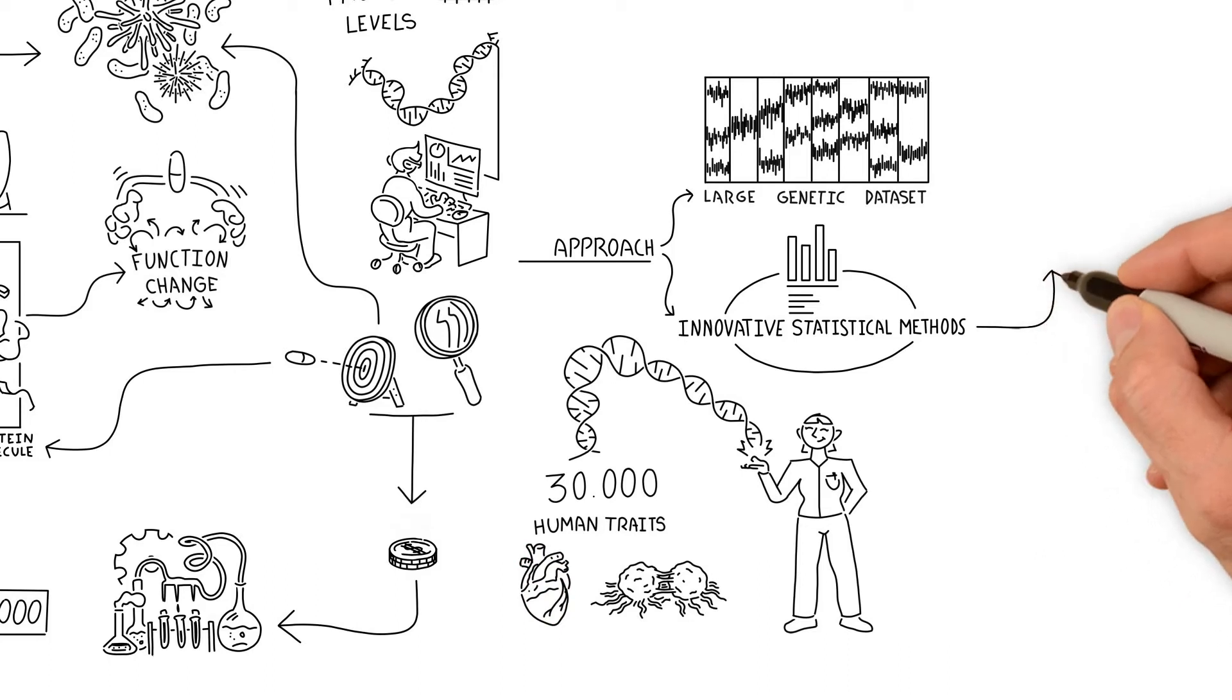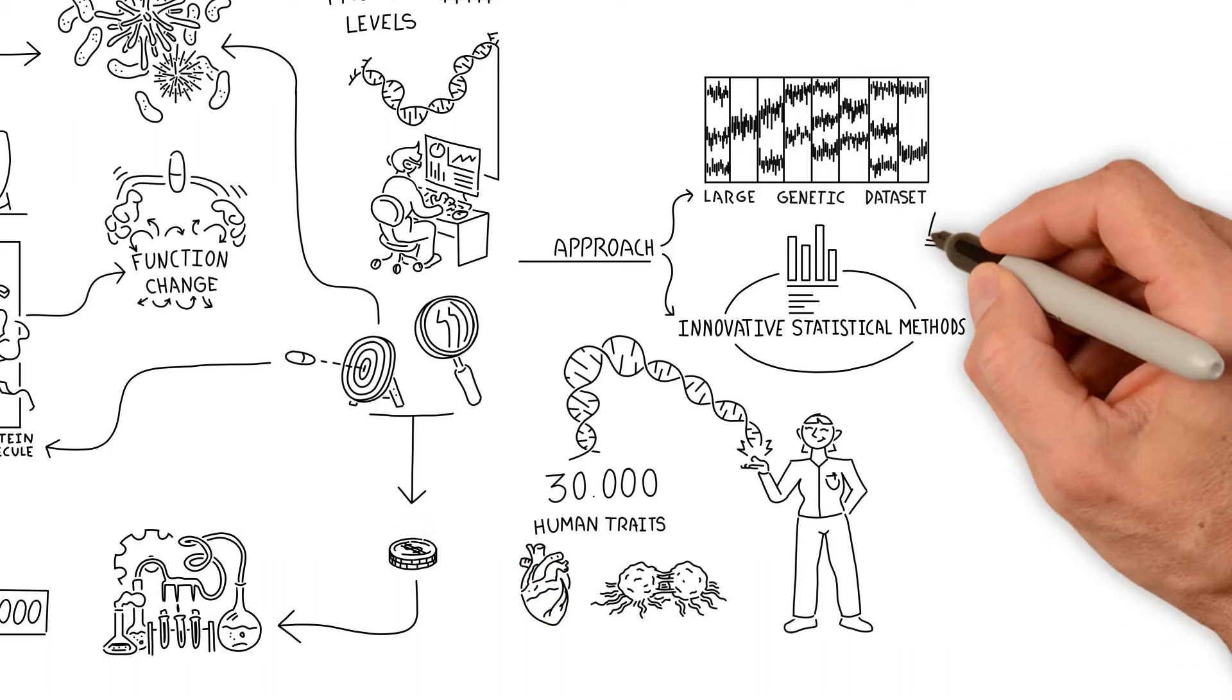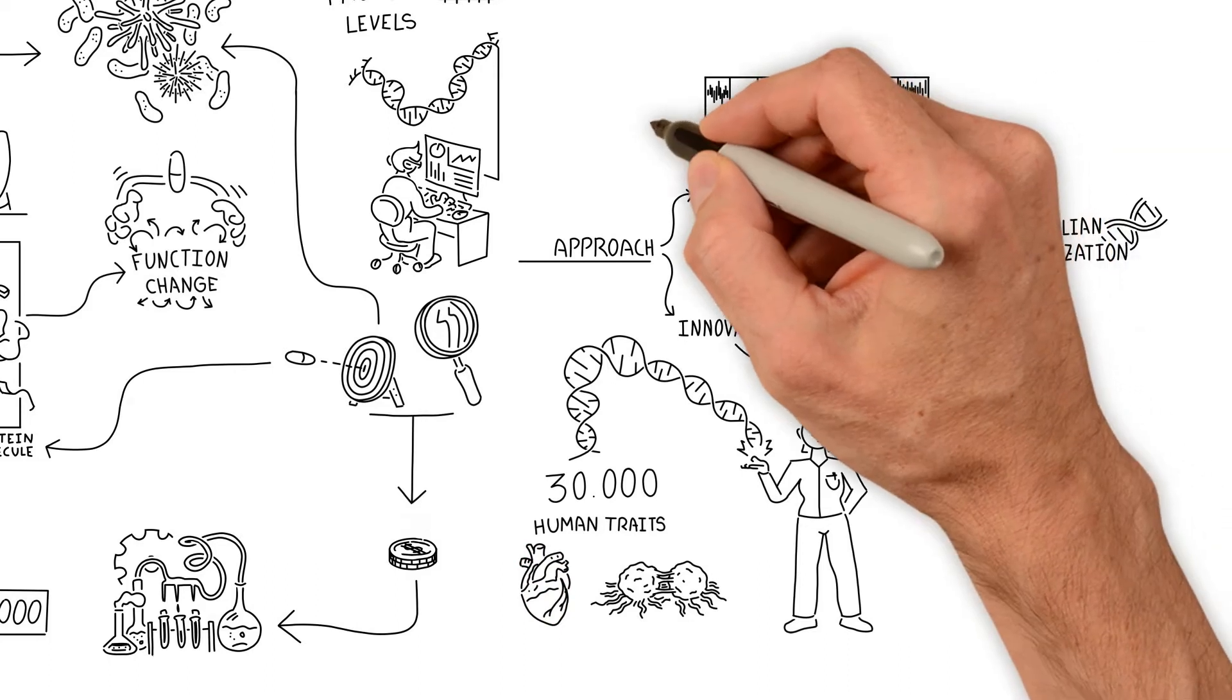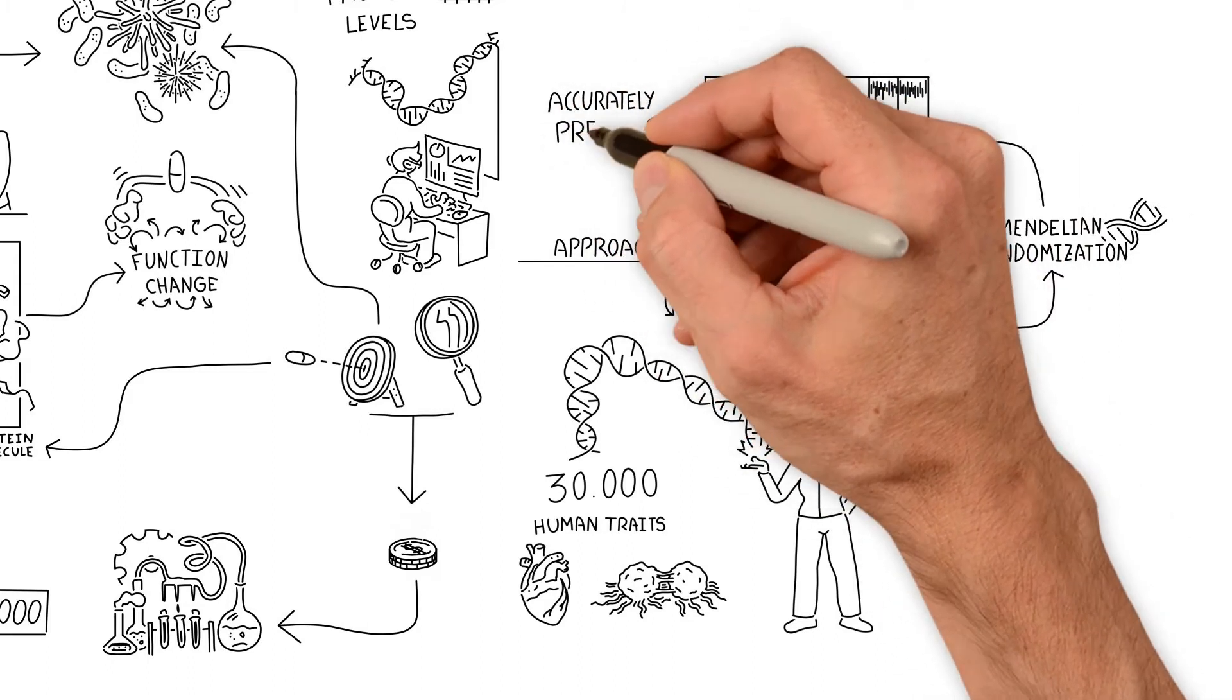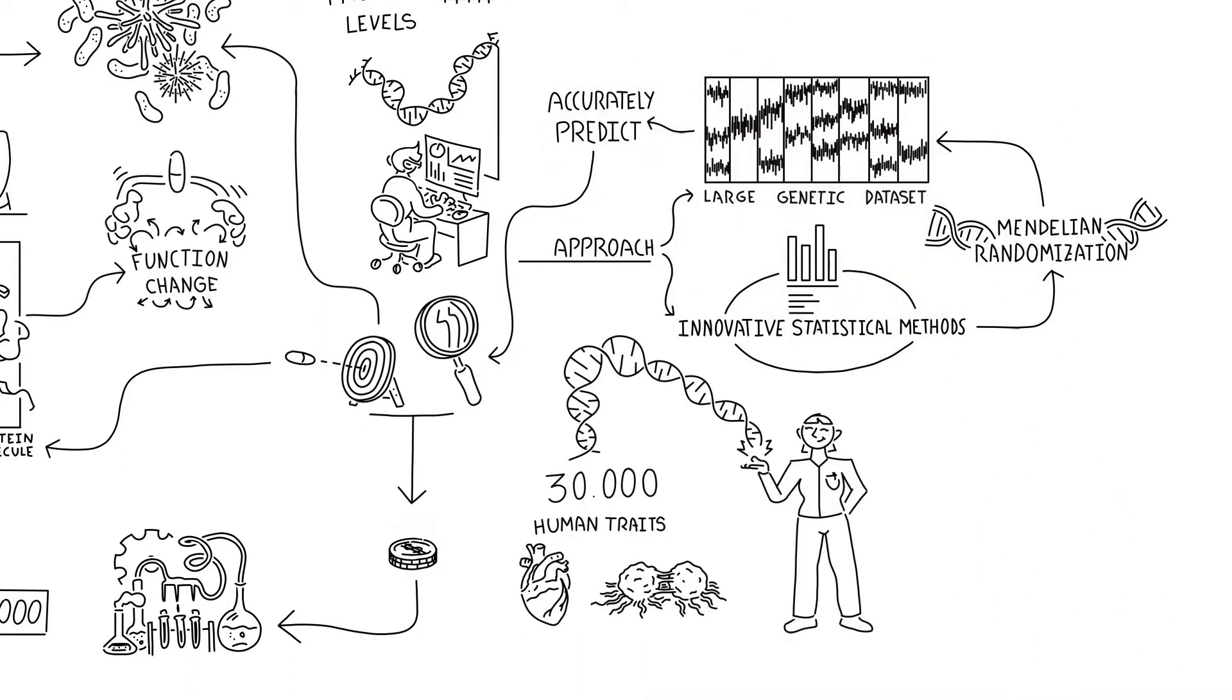Our unit has also developed innovative statistical methods such as Mendelian randomisation to enable us to use these genetic data sets to accurately predict how drug targets affect diseases.